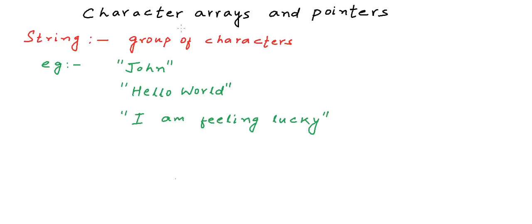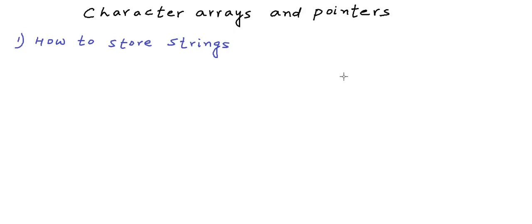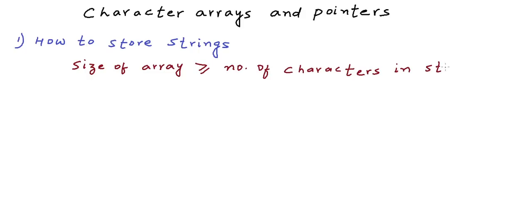The first thing we need to understand is how we store strings in character arrays. To store a string in a character array, the first requirement is that the character array should be large enough to accommodate the string. A large enough character array is one of size greater than or equal to the number of characters in the string plus one. So if our string is a name of four characters, like 'john', the size of the array should be greater than or equal to five.